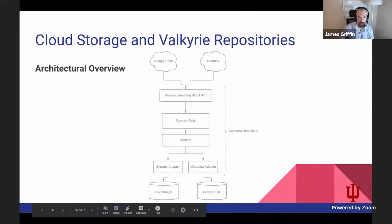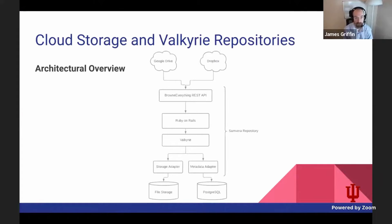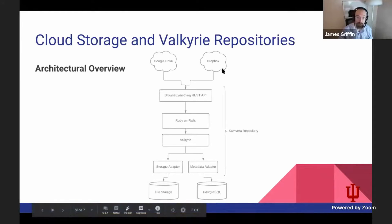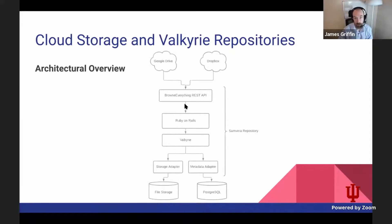Getting into the architectural overview of how this will look with the 2.0 re-implementation: the hope is that one would be in a position to select any number of different cloud storage service providers and, using the Browse Everything REST API, pass this through the entire Samvera repository stack. In cases where Valkyrie has been integrated, one would use the metadata passed from Google Drive to persist using the metadata adapter to a relational database like PostgreSQL, while binary files would be delegated to the storage adapter to write to a file storage solution.